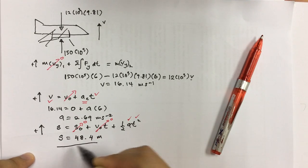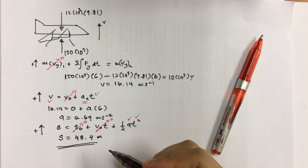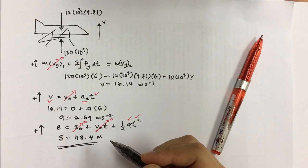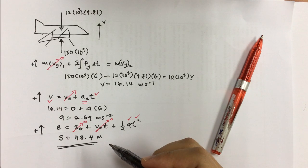So it goes up 48.4 meters. So which means that this kind of equation is very helpful if you are designing a drone, or the vertical takeoff and landing type of vehicle. That's right.